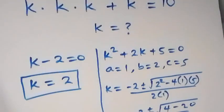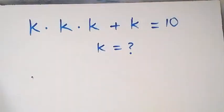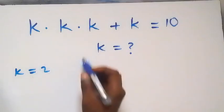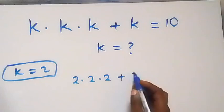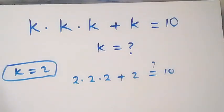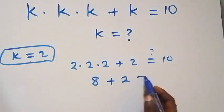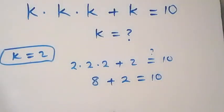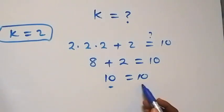We can quickly check for k equals to 2 to see if this satisfies the given problem. When we substitute k equals to 2, this becomes 2 times 2 times 2 plus 2, which equals 10. Then 2 times 2 times 2 gives us 8, then plus 2 equals 10. So 8 plus 2 gives us 10, which equals 10 — the left hand side equals the right hand side. We can also check for the other two solutions.